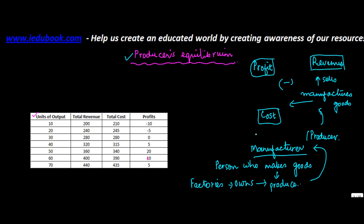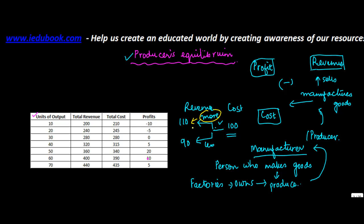Let's say I used all the machinery, I employed people, and I incurred a cost of 100 rupees. There could be two situations: the revenue could be more than 100, let's say 110, or the revenue could be less than 100, let's say 90. When the revenue is 110, the difference — revenue minus cost, which is 110 minus 100 — equals rupees 10, which is the profit. Whereas if the revenue is less than the cost, then revenue minus cost will be minus 10, which is known as the loss.